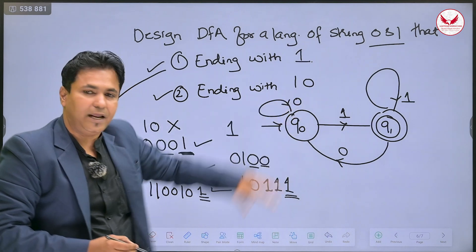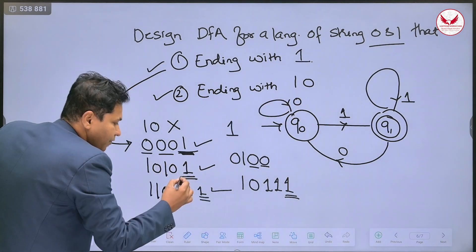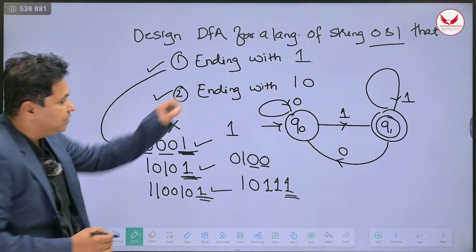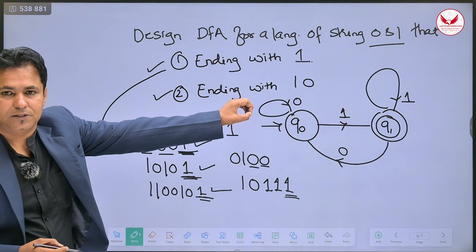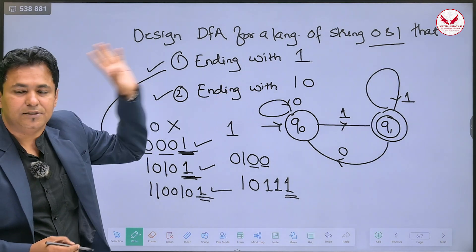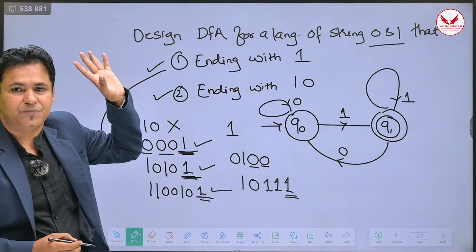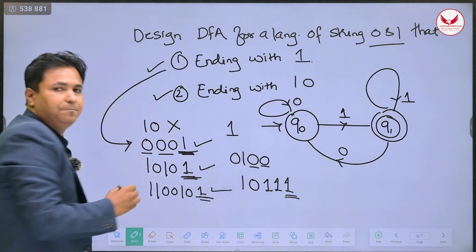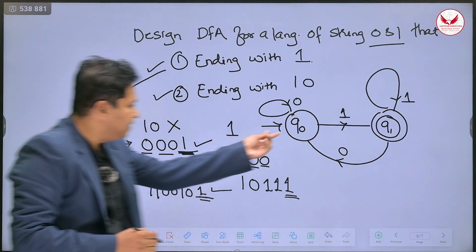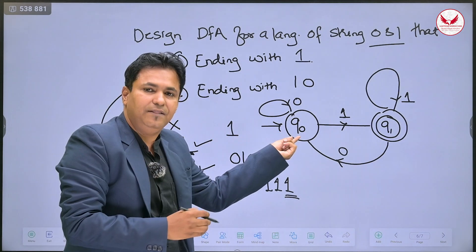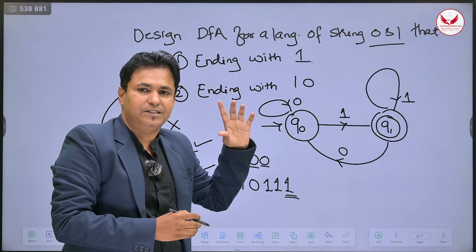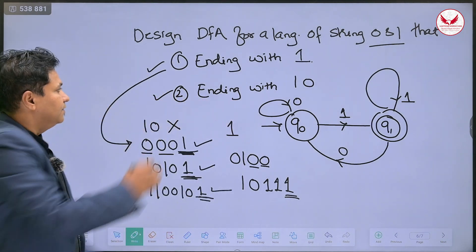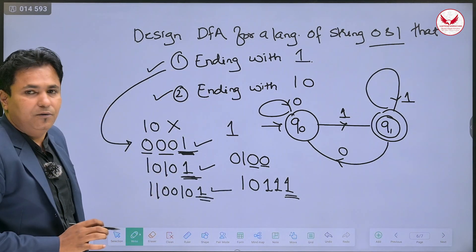So now, if you consider any input which is ending with 1, the machine halts in the final state, that is q1 state. If the string is not ending with 1, the machine will remain in q0 state. This is all about ending with 1.